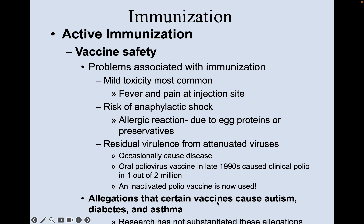Allegations that certain vaccines cause autism, diabetes, and asthma made really unsettling headlines. But many researchers and labs all across the world have tested and tried to find links between vaccines and autism, diabetes, and asthma, and we have not been able to substantiate any of these claims. There is no link between vaccines and autism, diabetes, and asthma — but of course that headline hasn't gotten as much play.